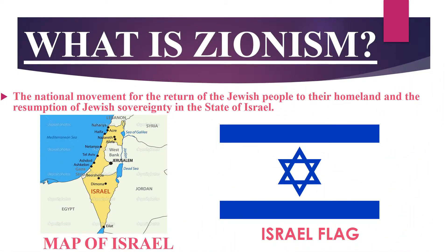Zionism is the national movement for the return of the Jewish people to their homeland and the resumption of Jewish sovereignty in the State of Israel. This was established after the Arab-Israeli war with the creation of the State of Israel. Once established, the Zionists fought to resume Jewish sovereignty, meaning they wanted to be a self-governing state. This on the right is the flag of Israel, which was adopted as the symbol of the Zionist movement, and it has the Jewish Star of David in it.